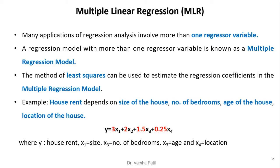House rent is the dependent variable y, and size of the house, number of bedrooms, age of the house, and location of the house are the independent variables represented by x1, x2, x3, and x4 respectively. We require to find the parameters of this equation — beta 0, beta 1, beta 2, beta 3, and beta 4. In multiple linear regression, sometimes we can even skip the intercept.